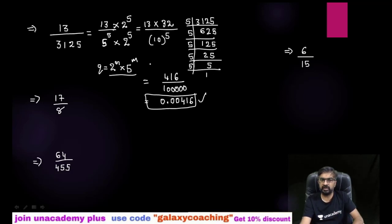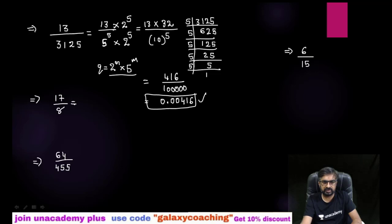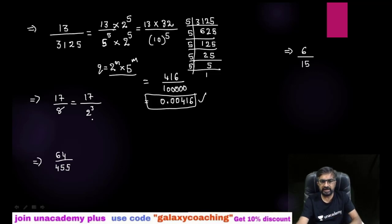Let me solve another example. The factors of 8 are 2 cubed, and then we have 17 in the numerator. So the denominator has factors in the form of 2 only, which means the answer will be terminating.